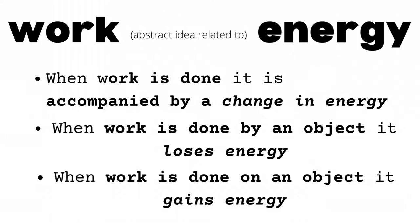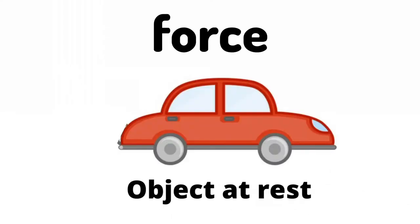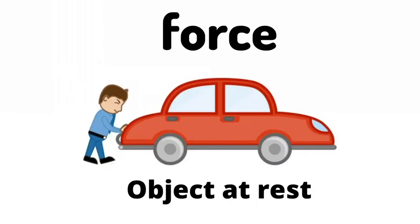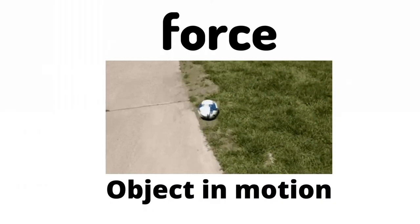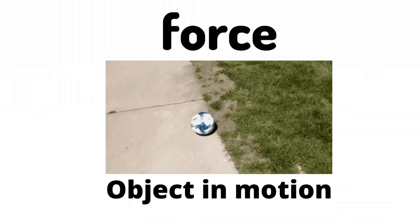In your previous lesson, you learned that force can change the state of motion of an object. If an object is at rest, it can be moved by exerting force on it. If an object is moving, it can be made to move faster or stopped by applying force on it.